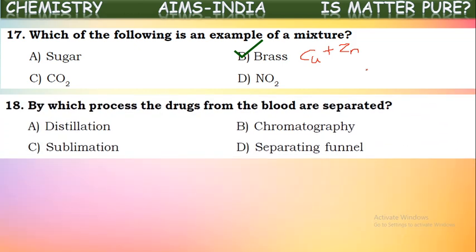By which process are drugs from blood separated? The drugs present in blood can be separated using chromatography. In chromatography, even very small particles present in a mixture can be separated. So chromatography is used for separation of drugs from blood samples.